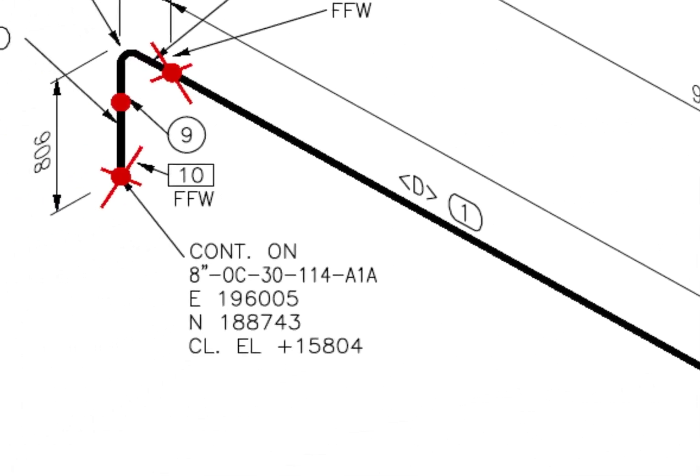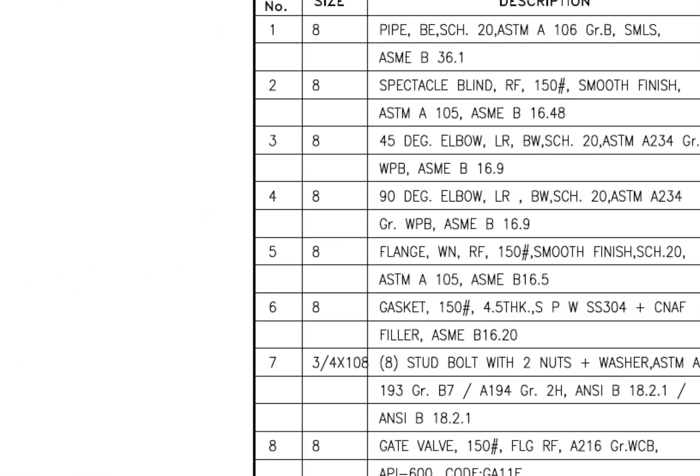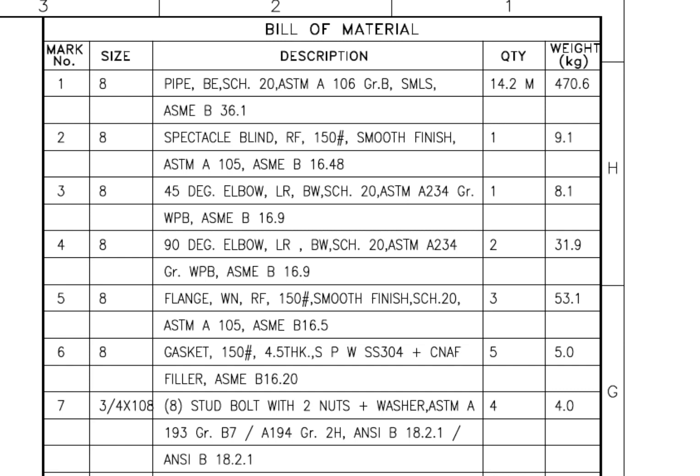What is the item number? Item number is 1. Go to the material list. Item number 1 is bevel end, schedule 20, seamless pipe.